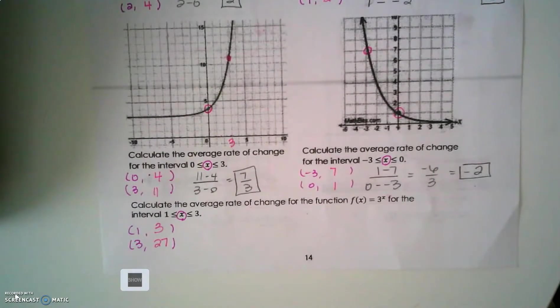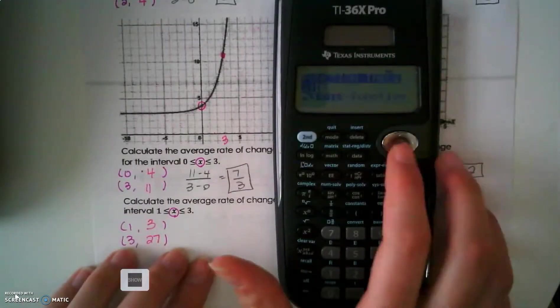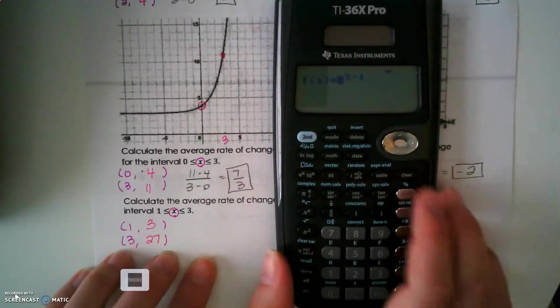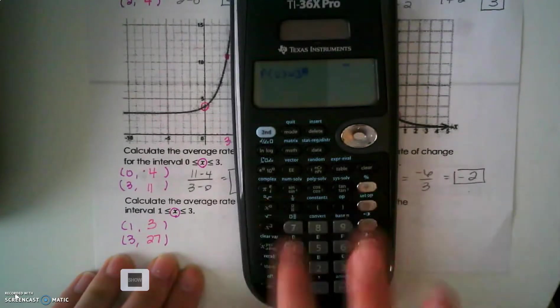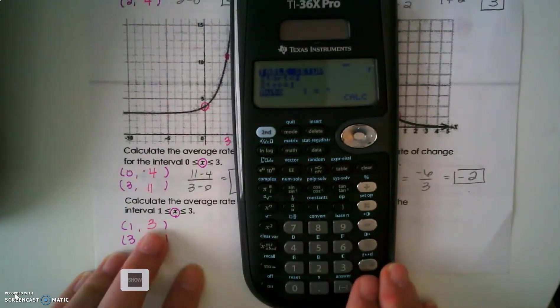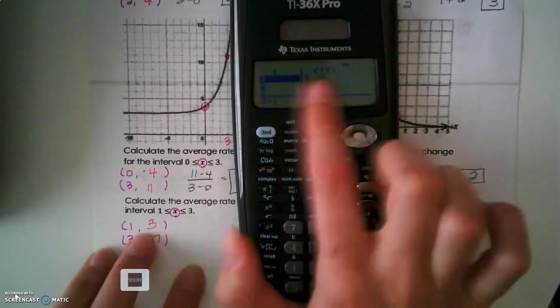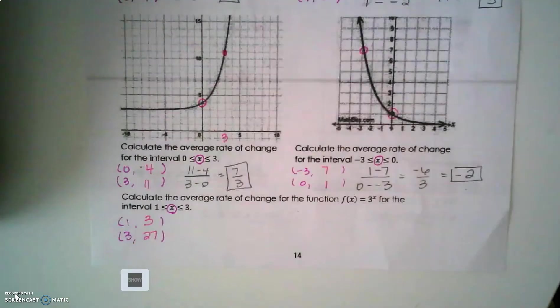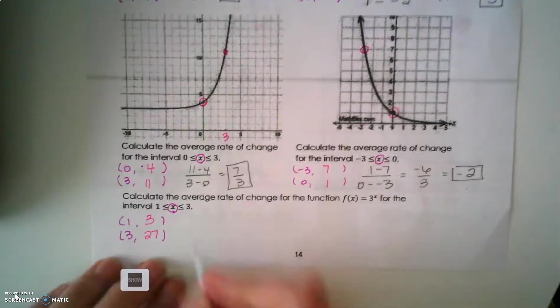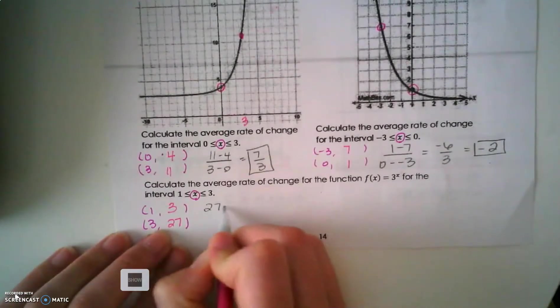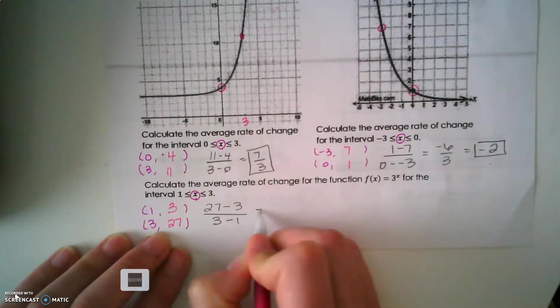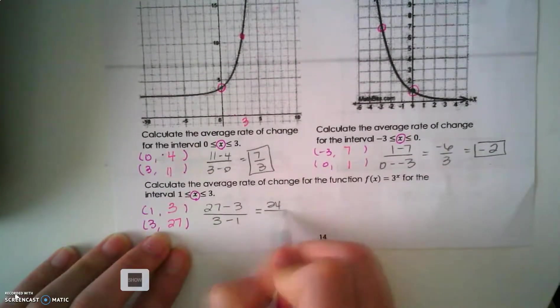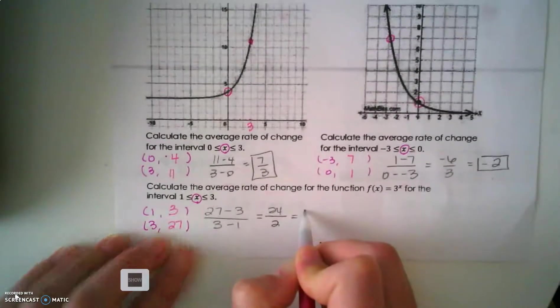Or, I can make a table of values in my calculator. And I can go and type in the function they gave me, which was 3 to the x. And they want to know at 1, so I'm going to change that to a 1. And look, I got 1, 3, and 3, 27. So, finding those points, I can then use my slope formula. 27 minus 3 all over 3 minus 1. So, that's 24 over 2, which is 12.